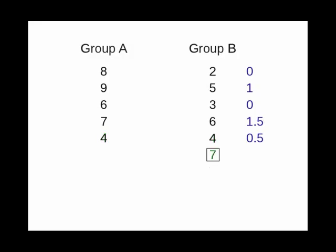Finally, look at group B's score of 7. How many points does it earn for group B? Stop the video now and see if you can figure it out. It scores two and a half points for group B, because it ties the 7 in group A, and it beats the 6 and the 4.